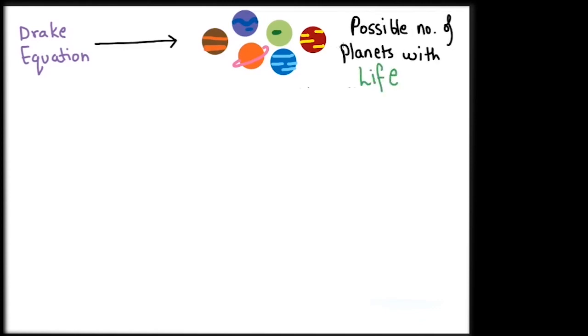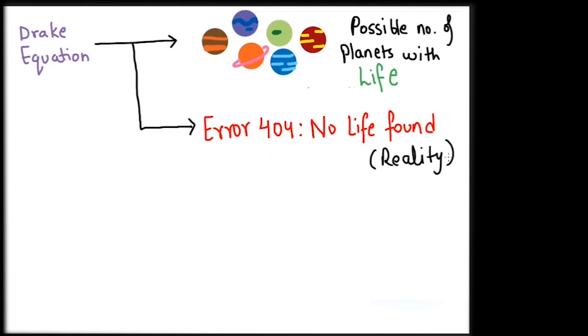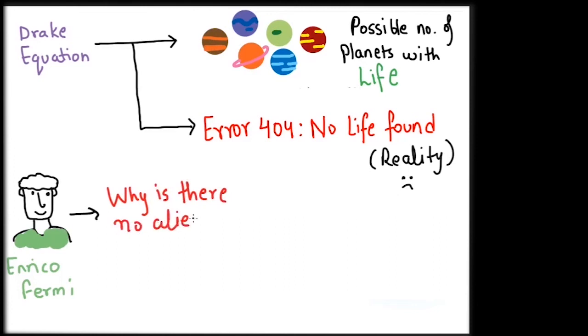Despite all the probability of finding life and arguments in support for it, there still exists a lack of life around the universe. We haven't been able to find any. This apparent paradox was popularized by Enrico Fermi, who voiced that if life is probable outside earth, why don't we see aliens visiting us? And why haven't we even detected any till now? This apparent paradox is called the Fermi paradox. Many explanations have been given to answer this.